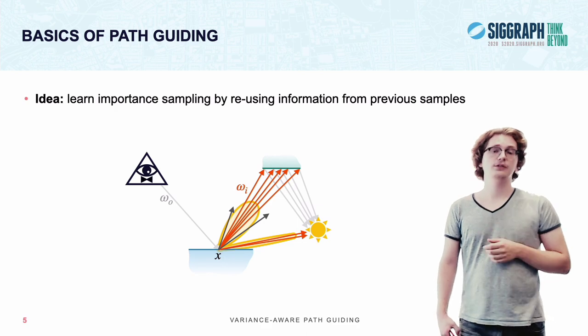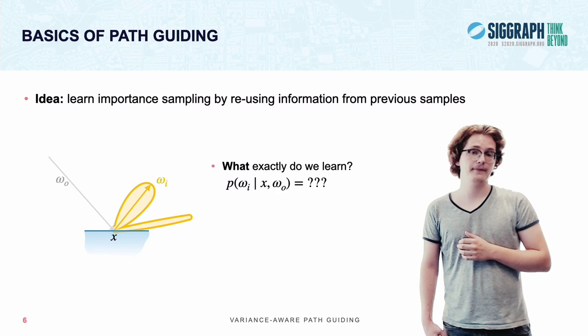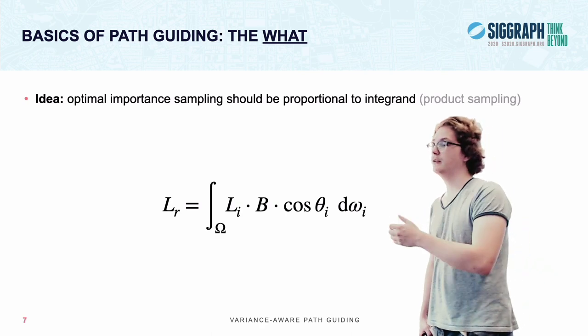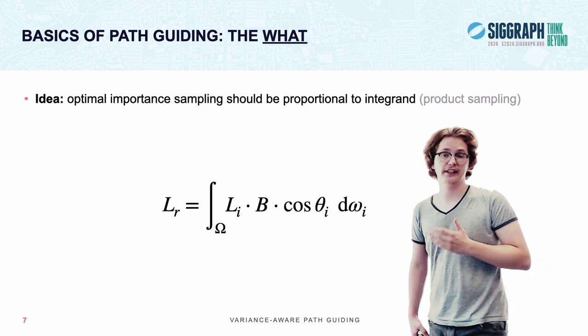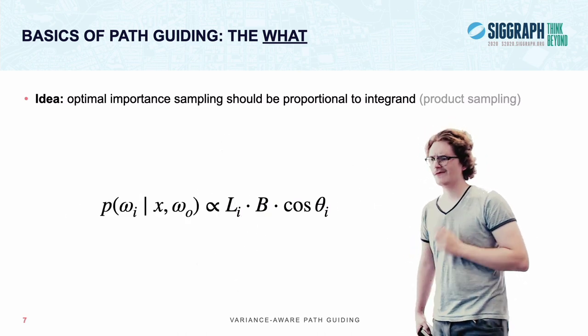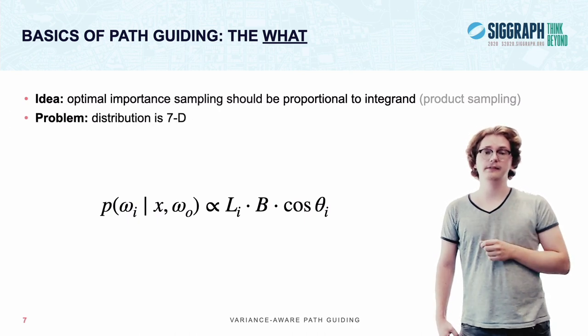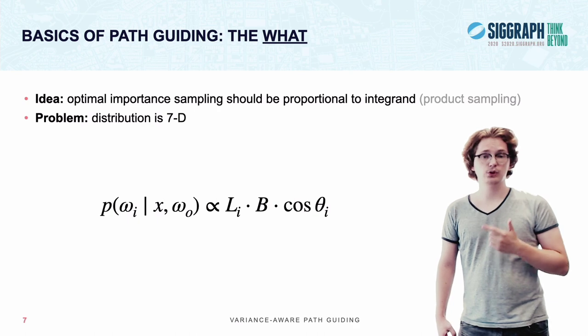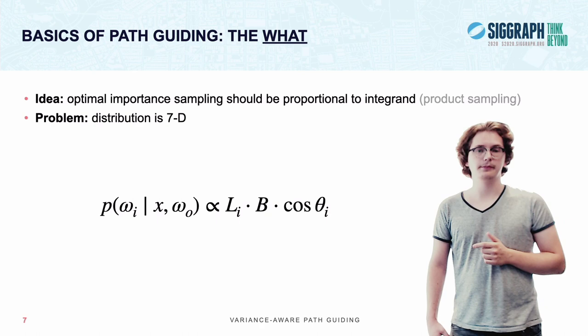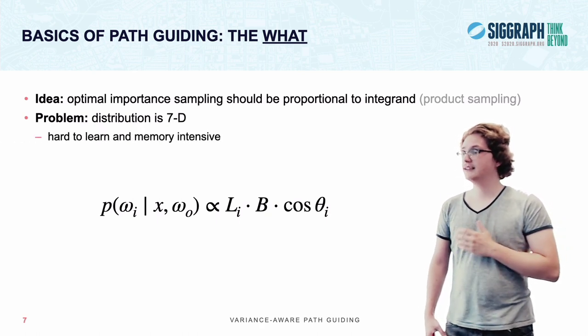Now obviously this raises the question, what exactly is the distribution that we want to learn? As you probably know, an optimal importance sampling strategy would be one that's proportional to the integrand of the integral that you're trying to solve. Which would mean our distribution should look like this. However, there's a problem with this distribution and that's that it's seven dimensional. There's three dimensions for space, two for the direction we're coming from and two dimensions for the direction that we're trying to sample. And this can make this distribution very hard to approximate and memory intensive to work with.